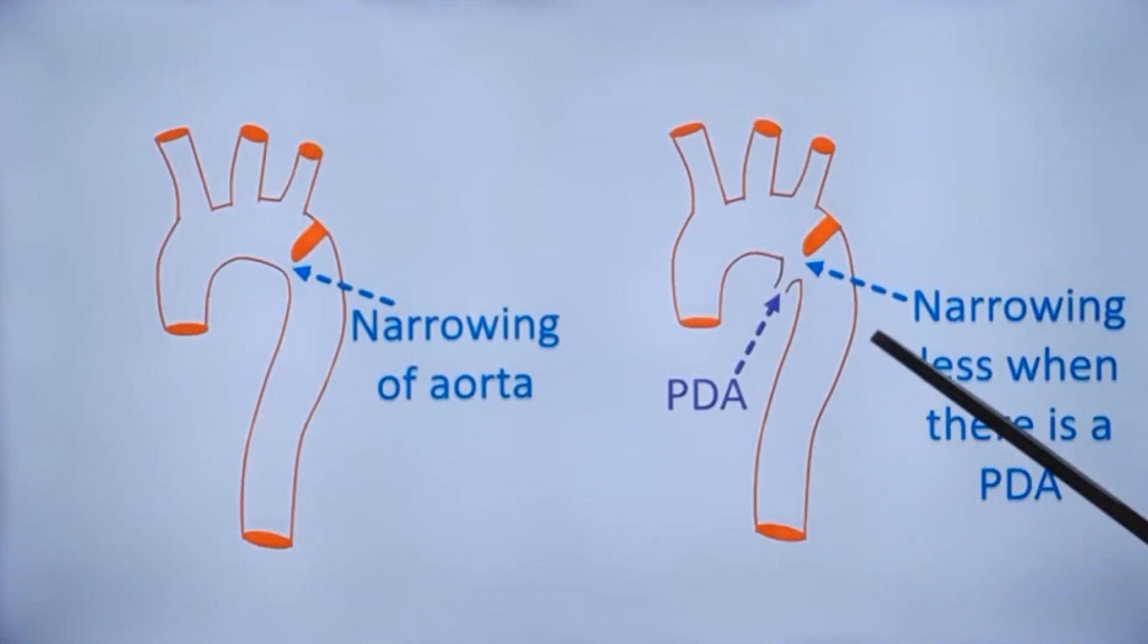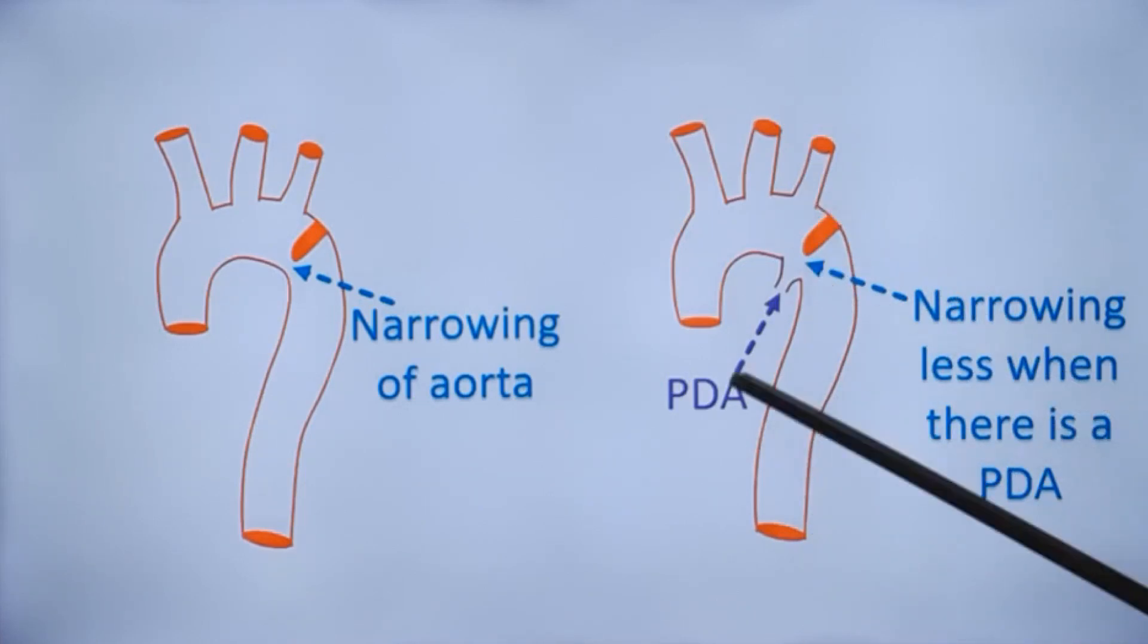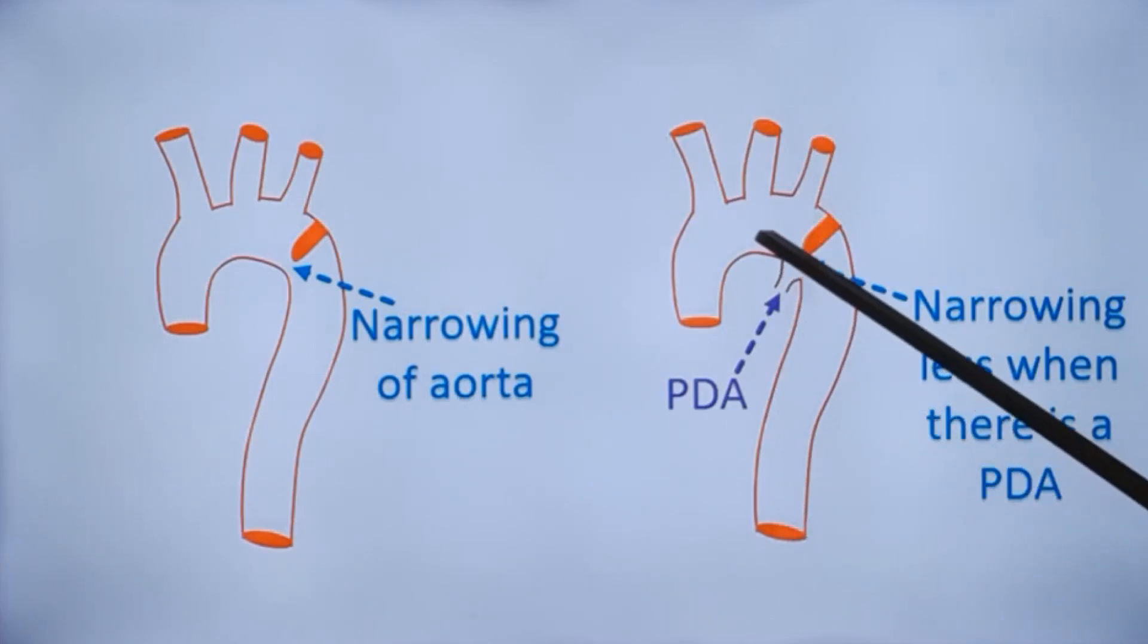Moreover, PDA produces a hyperdynamic circulation and the pulse volume will be higher. Even if you carefully examine the lower limb pulses, in such a situation you can miss coarctation of aorta